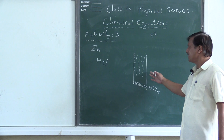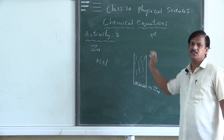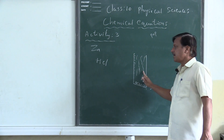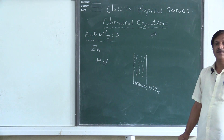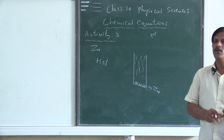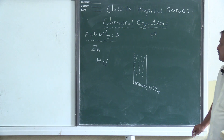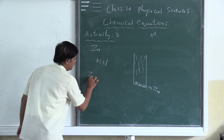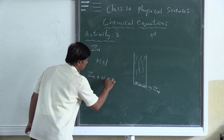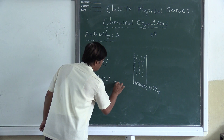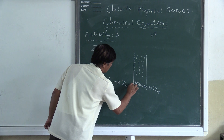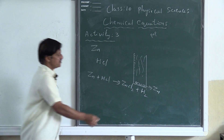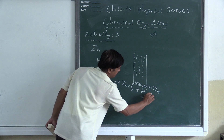So from Activity 3, what we observed is that when a chemical reaction takes place, there is a chance for a gas to be evolved. And if you write the equation, it is: Zn + HCl → ZnCl₂ + H₂. This is the hydrogen gas which is liberated.